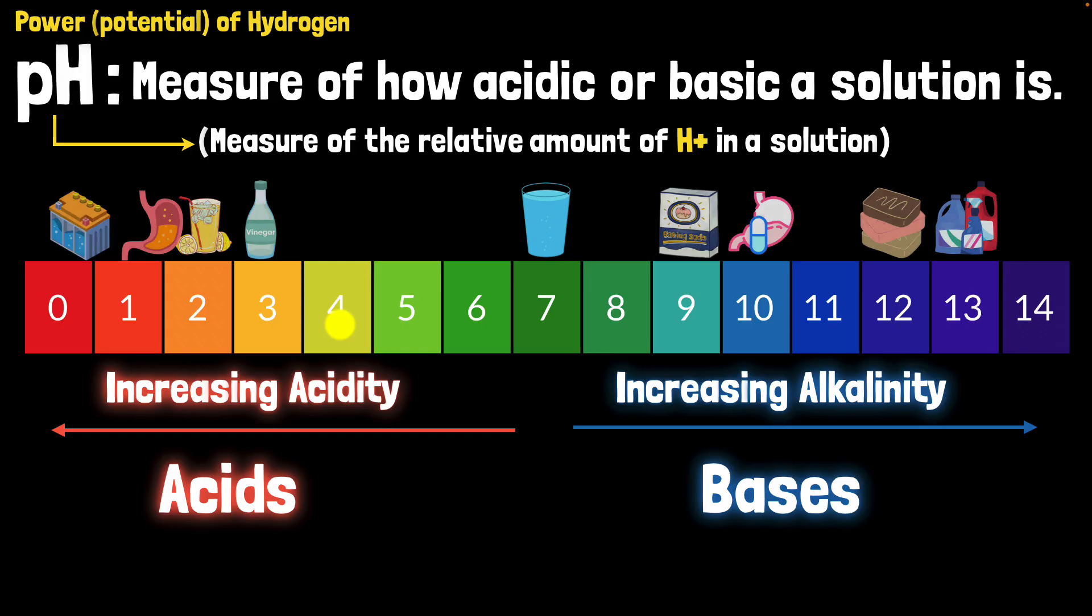So here are our common examples on the pH scale. Another interesting thing over here is we know now something that has a pH of two, for example, is more acidic than something that has a pH three. But how much more? Well, this is actually a logarithmic scale. So it's 10 times more. Something that has a pH of two is 10 times more acidic than something that has pH three. And similarly, something that has pH one is 10 times more acidic than something that has pH two and so on and so forth.